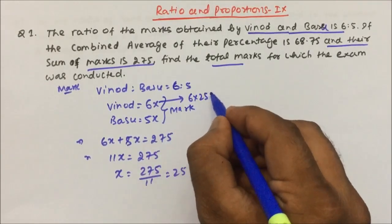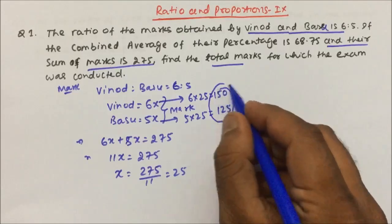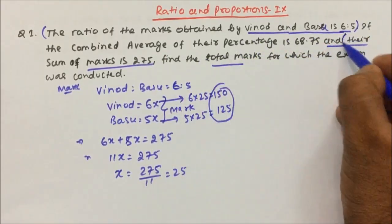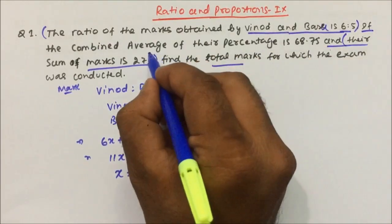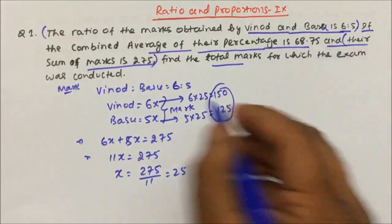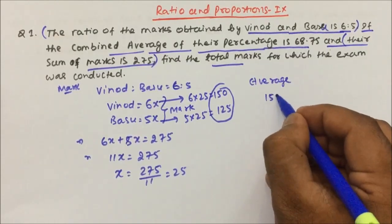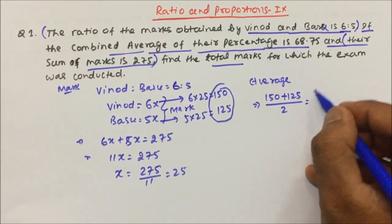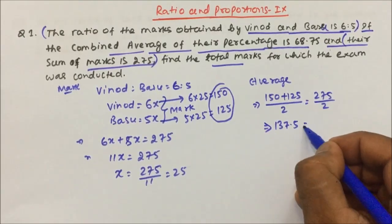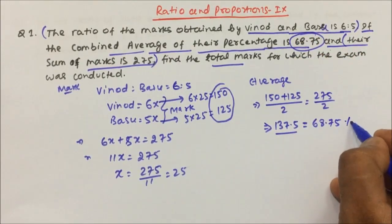So Binod scored 6 times 25 equals 150 marks, and Basu scored 5 times 25 equals 125 marks. Now if the combined average of their percentage is 68.75%, the combined average of their marks is 150 plus 125 divided by 2, which is 275 by 2, which is 137.5. So the combined average of their marks is 68.75 percentage.